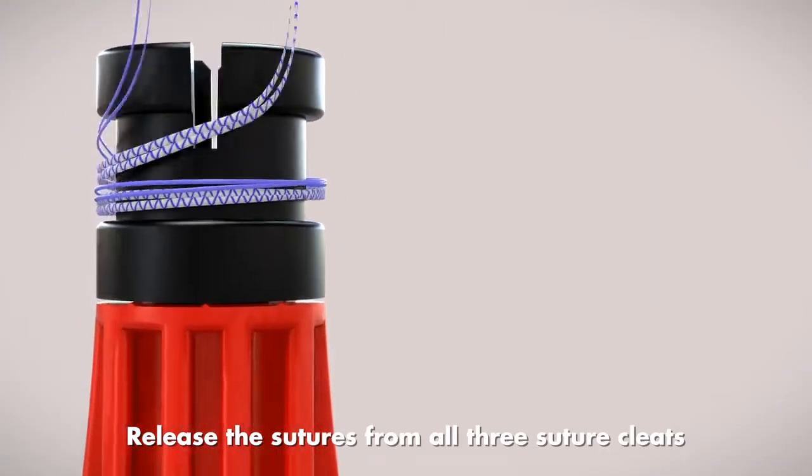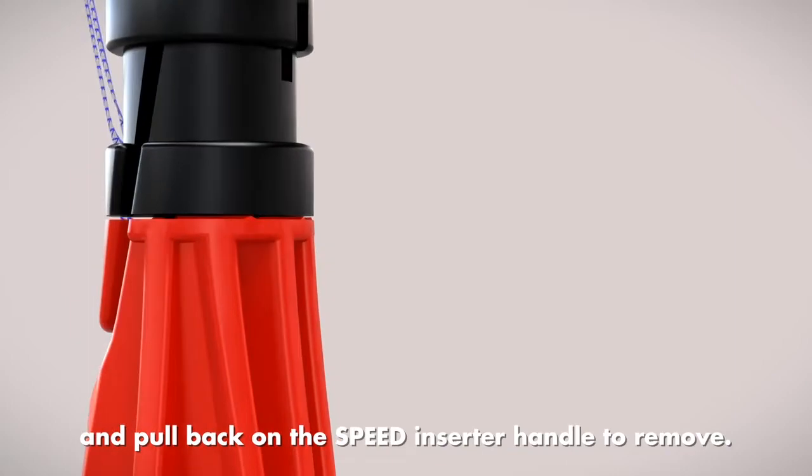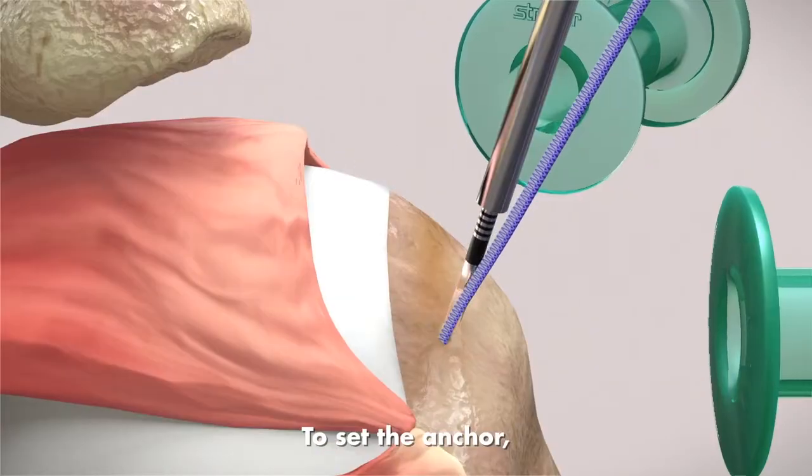Release the sutures from all three suture cleats and pull back on the speed inserter handle to remove. To set the anchor, slowly pull all suture limbs simultaneously.